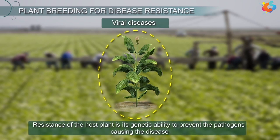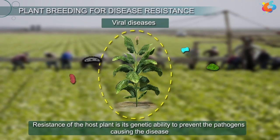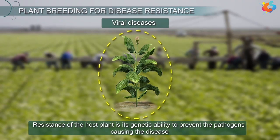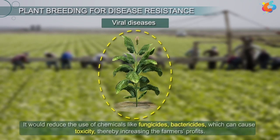Resistance of the host plant is its genetic ability to prevent pathogens from causing disease. If the plants have disease resistance, it would reduce the use of chemicals like fungicides and bactericides, which can cause toxicity, thereby increasing the farmer's profits.